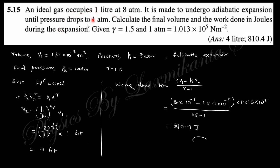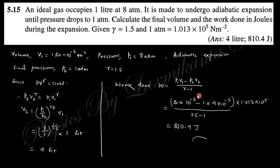Question 16: An ideal gas occupies 1 liter at 8 atmospheric pressure. It undergoes adiabatic expansion until the pressure drops to 1 atmosphere. Calculate the final volume and work done in Joules. Using PV^γ = constant, the final volume is found to be 4 liters. Work done equals (P₁V₁ − P₂V₂) / (γ − 1). Putting P₁ = 8 atm, P₂ = 1 atm, V₁ = 1 × 10⁻³ m³, V₂ = 4 × 10⁻³ m³, and converting atmospheres to SI units (× 1.01325 × 10⁵), gives the work done in Joules.